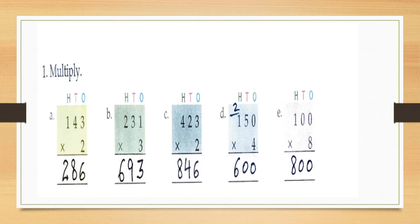Now C part: four hundred and twenty three multiplied by two. First multiply the ones by two — that is three into two is six. Write six under ones. Then multiply the tens by two — that is two into two is four. Write four under tens. Now multiply the hundreds by two — that is four into two is eight. So children your answer will be eight hundred and forty six.